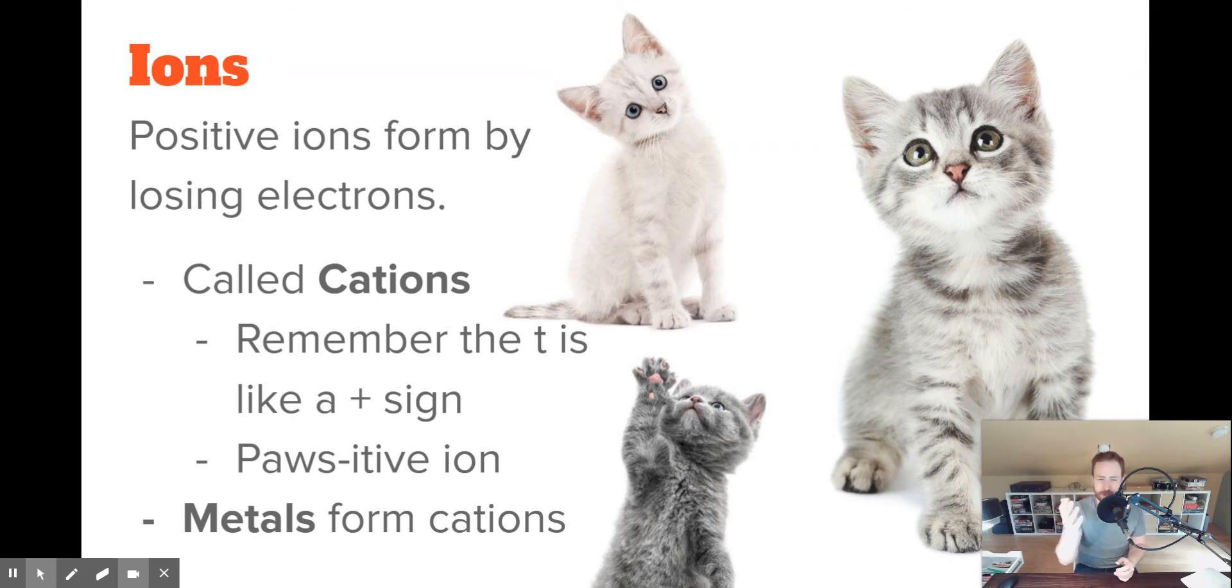Or you can remember that the plus, the T in the middle of cations looks like a plus sign. And metals are the elements that are going to form these positive ions, these cations.